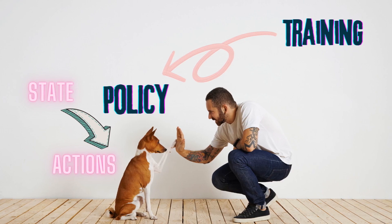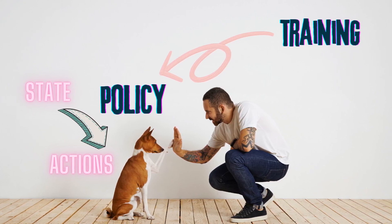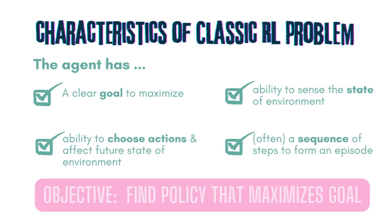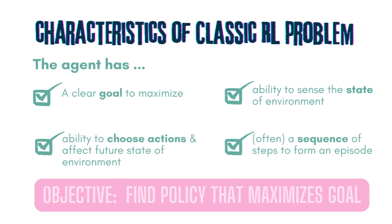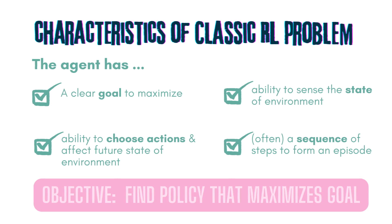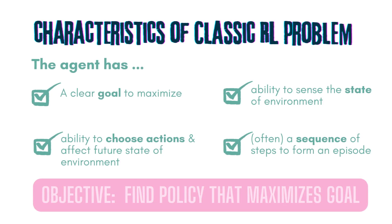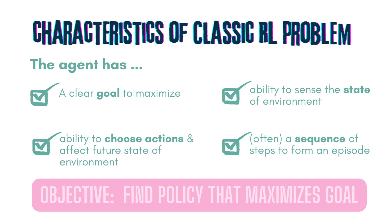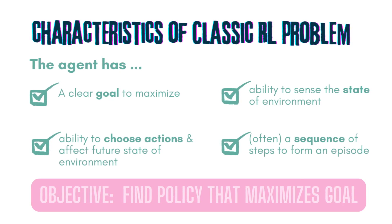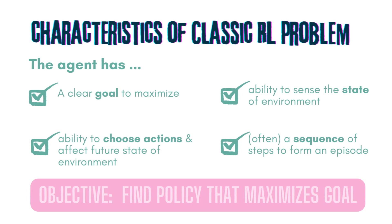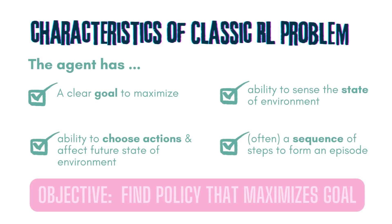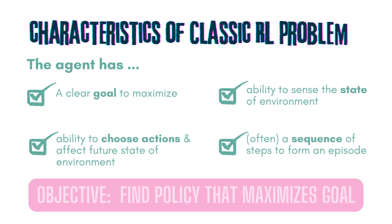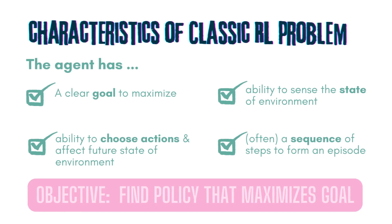In summary, a policy is the agent's protocol for deciding what action to take for a given state or scenario. Training helps to change the policy to a more desirable one with the use of treats. In this example, you can see the four typical characteristics of an RL problem. Firstly, the agent — Pavlova — has a clear goal to maximise. Secondly, it is able to sense and understand the current state of the environment. Thirdly, the agent has decision-making power to choose actions that affect the environment. Finally, RL problems often involve a series of state changes and actions over time, forming a sequence also referred to as an episode. The objective of RL algorithms is to find the best policy that maximises the agent's goal, despite unknowns and uncertainties in the environment.